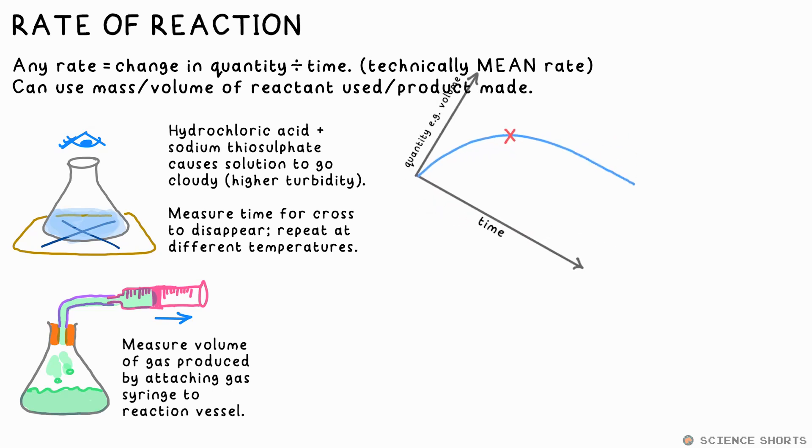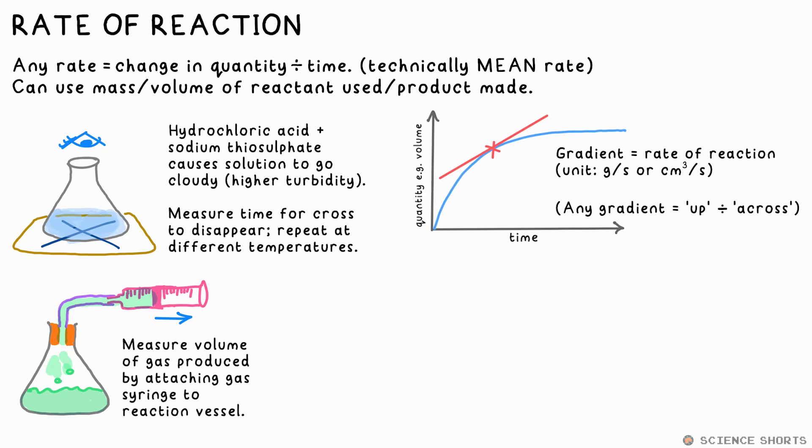Pro tip, turn the page so you're drawing the tangent horizontally. That will help you draw it accurately. Then, like the equation says, you can take the change in quantity and divide by time. Up divided by across, that's the gradient.